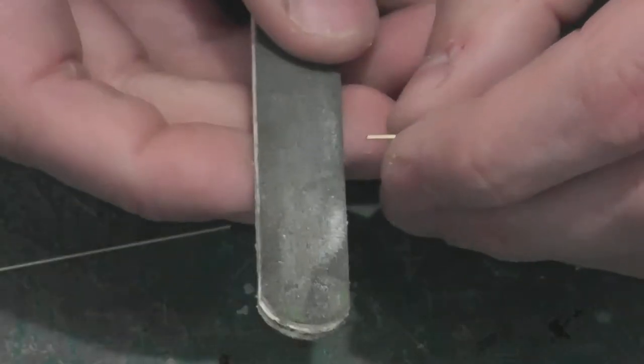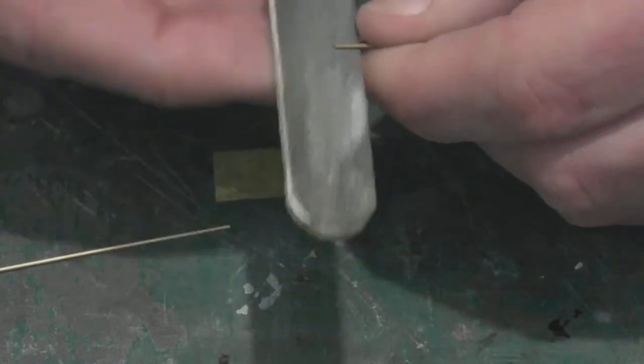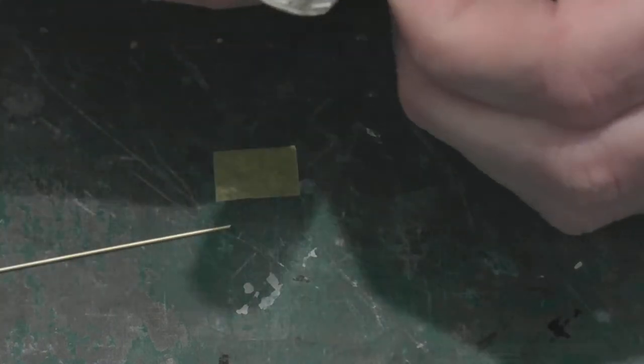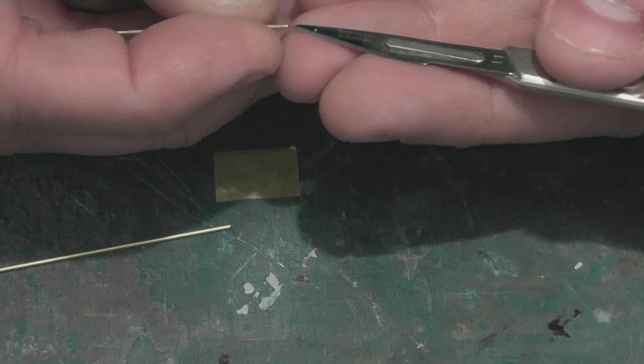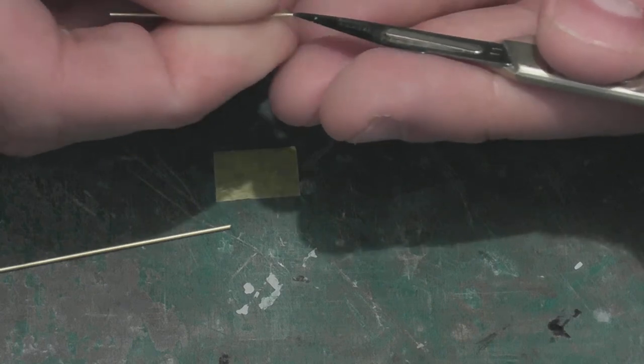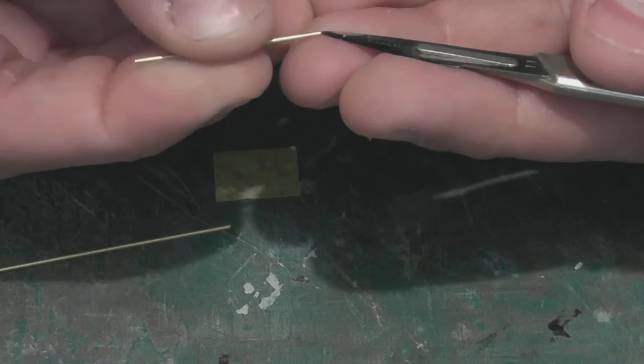Take a fine sanding pad or sanding stick, just give it a very, very light sand. Use a knife blade. Be careful you don't slip here or you'll quite clearly cut yourself. So I'm just doing that, just deburring each side.